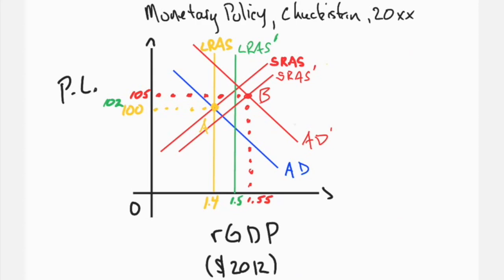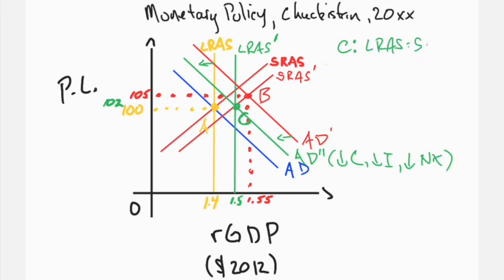Foreign actors pay relatively more for each Chakistani good, decreasing export expenditure, while foreign-produced goods become relatively less expensive given the appreciated currency, increasing imports. Together, the decrease in consumption plus investment plus net exports decreases aggregate demand, shifting from the inflationary equilibrium at AD' to a long-run equilibrium at AD'', given by point C. At point C, growth in production from 1.4 to 1.5 is met with equivalent expenditure growth, resulting in 2% price growth from 2012, and full employment exists.